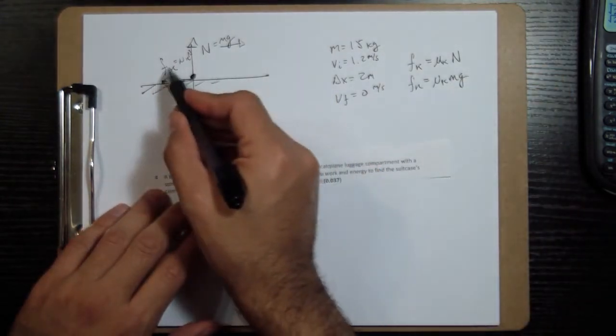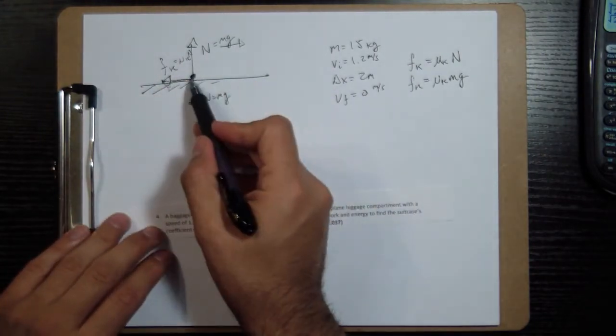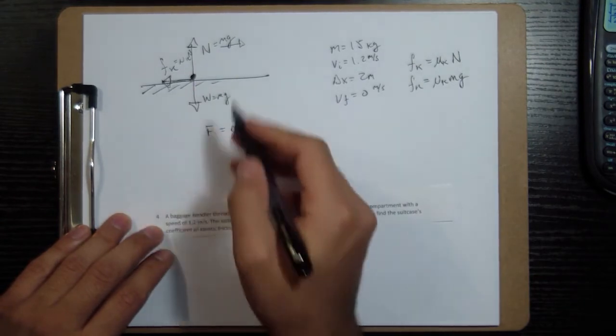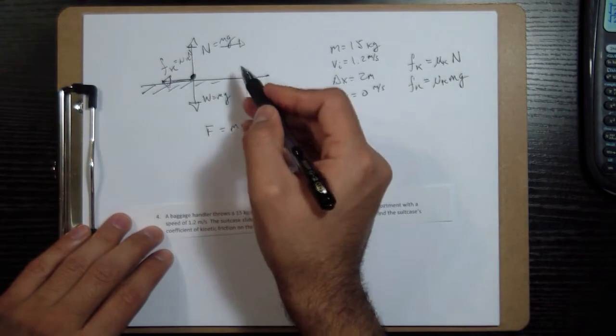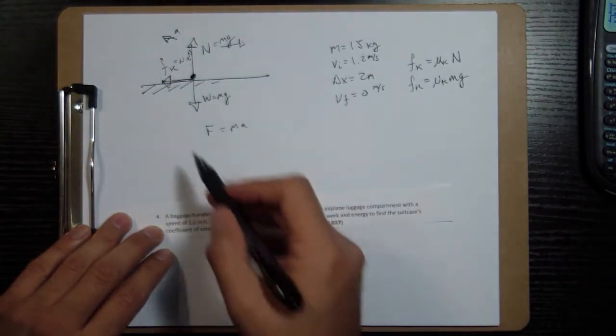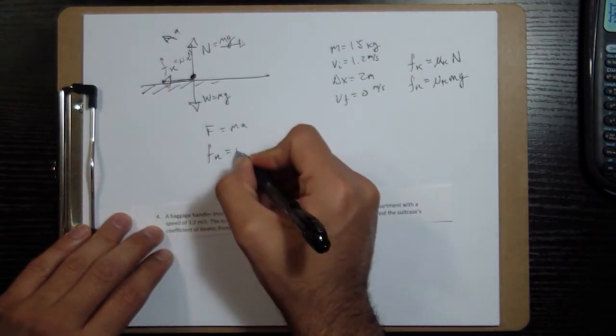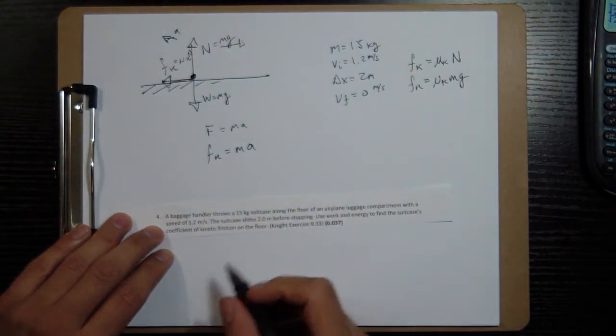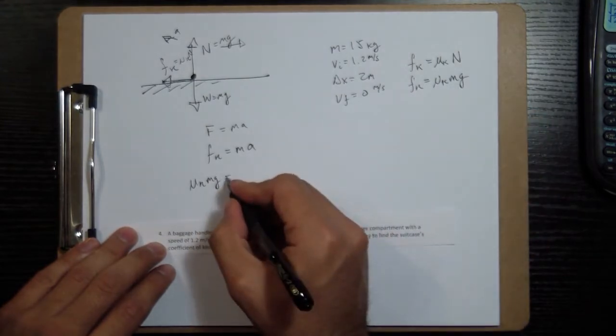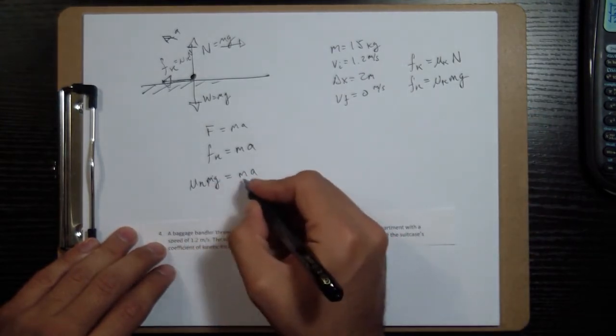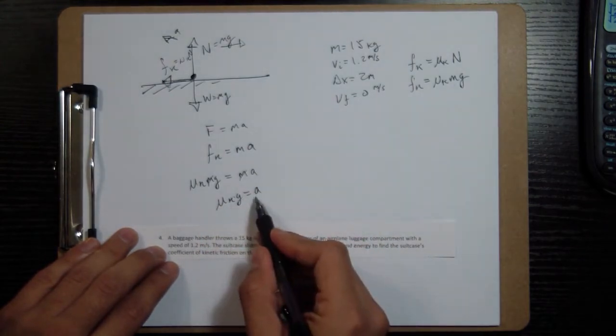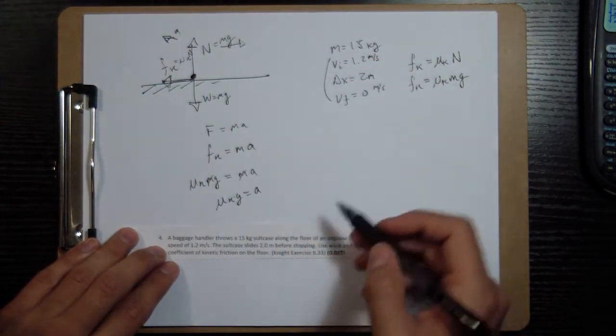And since our acceleration is in this x direction, we'll write F equals mA. Let's say acceleration is this way. Then the friction is in the same direction, so I can write friction is equal to mass times my acceleration. And mu k mg equals mass times acceleration. The masses cancel out. Mu k g is equal to my acceleration.